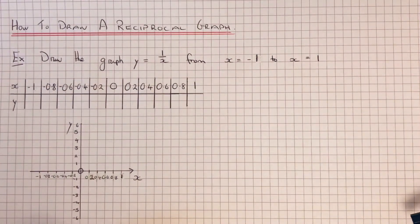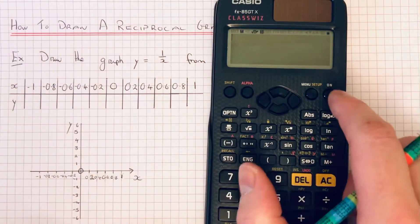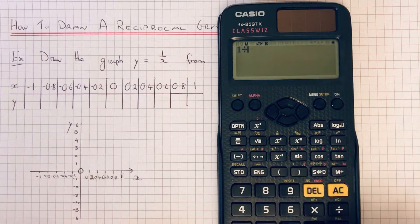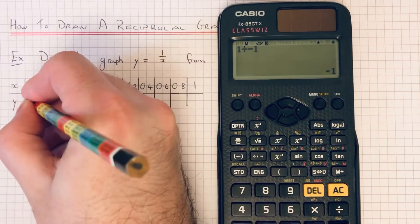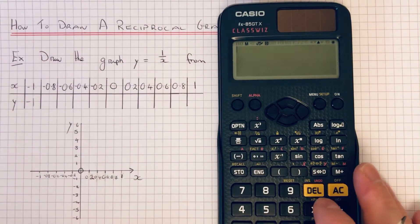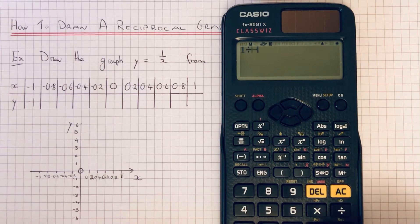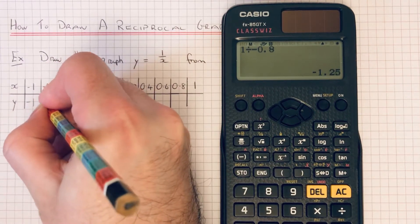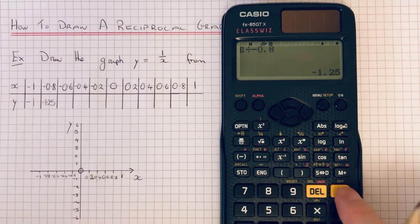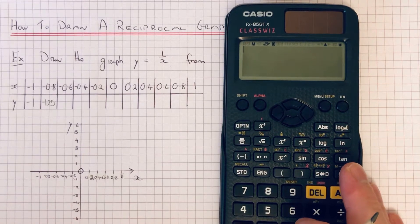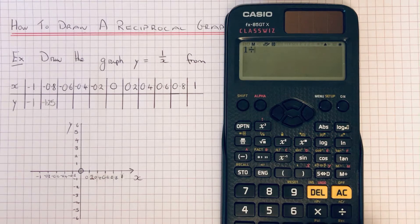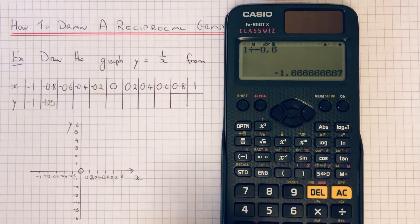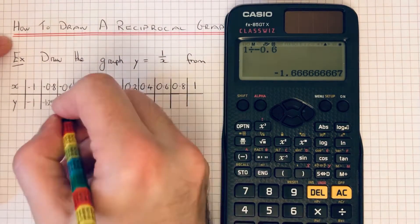To do this we just need to divide 1 by the x coordinate. So we do 1 divided by minus 1, which is minus 1. Then we've got x is minus 0.8, so we do 1 divided by negative 0.8, which is minus 1.25. Then we've got x is minus 0.6, so we do 1 divided by minus 0.6, which is minus 1.7 to one decimal place.